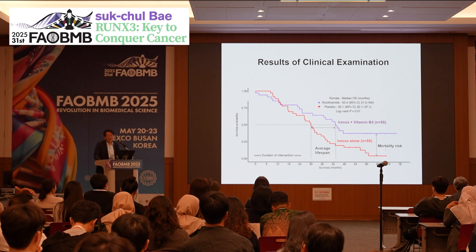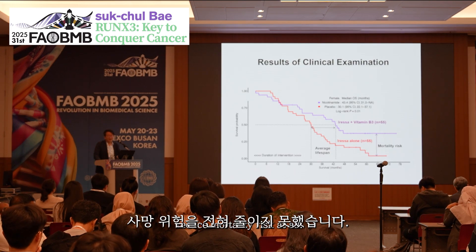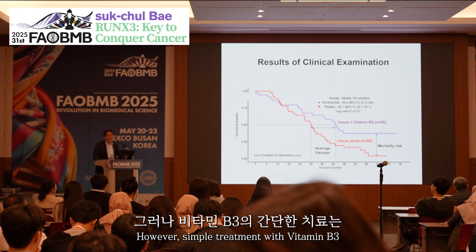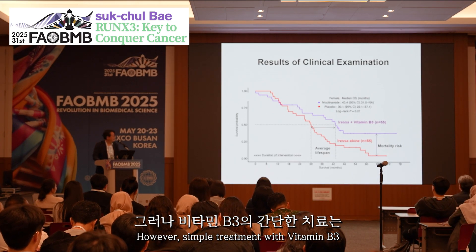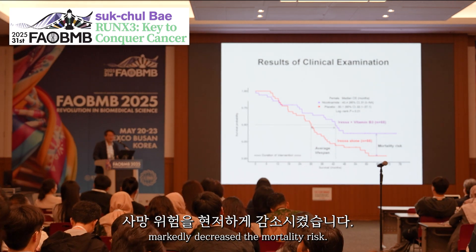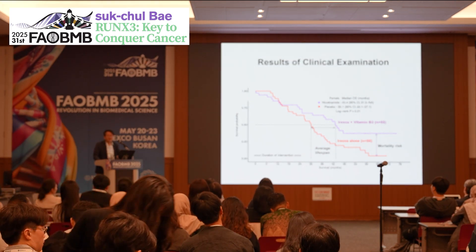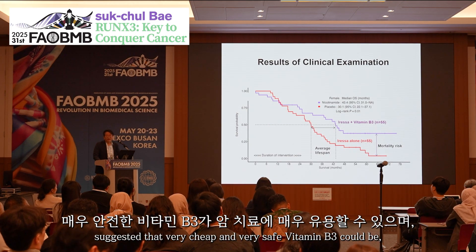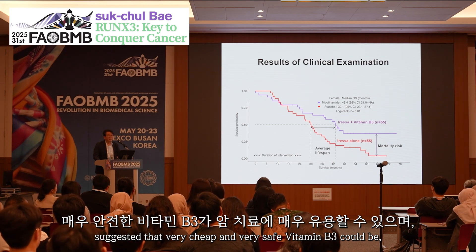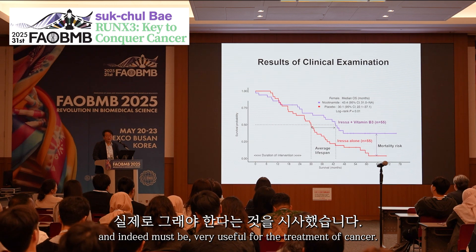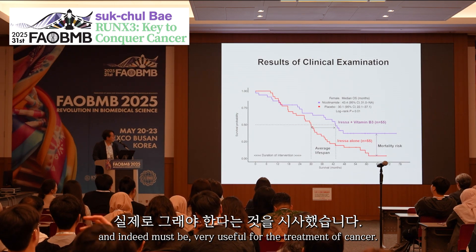The survival was extended by about 13 months — an amazing result. More importantly, regarding mortality risk, no other chemicals so far can reduce mortality risk at all. However, simple treatment with Vitamin B3 markedly reduced the mortality risk. Therefore this observation suggests that very cheap and very safe Vitamin B3 could and must be very useful for the treatment of cancer.